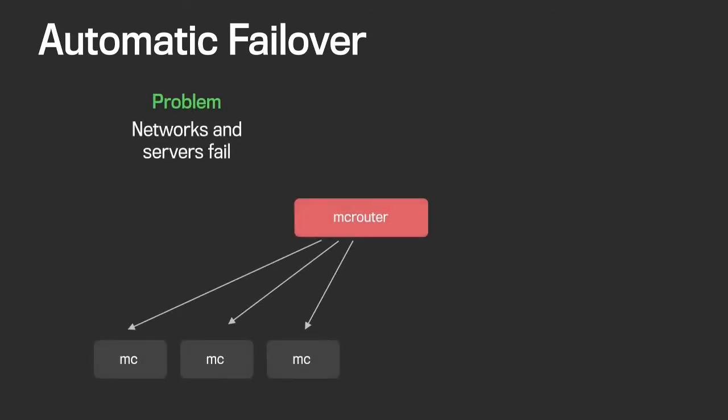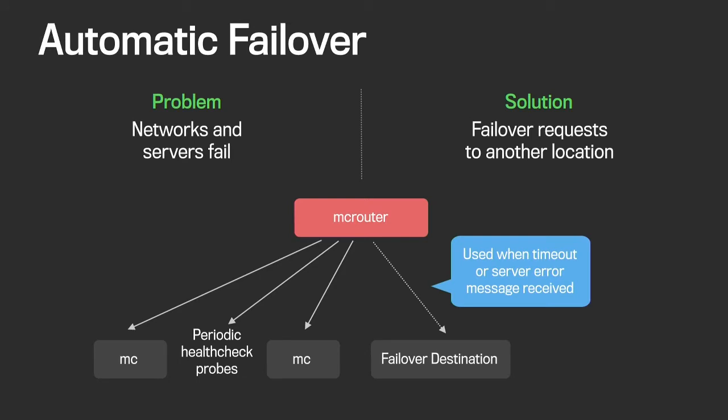Another common problem is transient failures. In large-scale infrastructure, networks and servers will fail all the time, and we need to handle this in a robust way. When MacRouter detects that a server is unavailable — either via a timeout or a network error — it can automatically failover the request to another destination which can actually handle the traffic. Only the first request will have to pay the timeout penalty; future requests will not have any extra latency. At the same time, we keep sending periodic health check probes in the background, and when a probe comes back successfully, MacRouter detects that the original server is back up and everything comes back to normal.